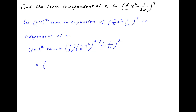This is equal to 9 choose p times 3 raised to the power (9 − p) times x raised to the power (18 − 2p), divided by 2 raised to the power (9 − p), multiplied by (−1) raised to the power p, divided by 3 raised to the power p times x raised to the power p.